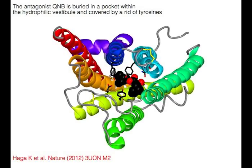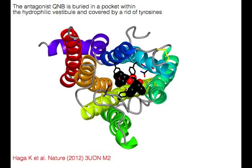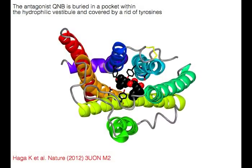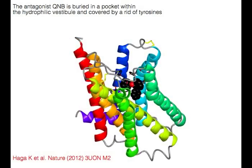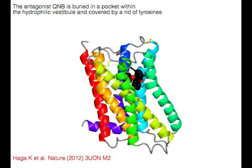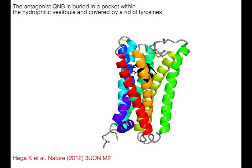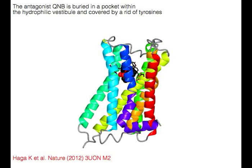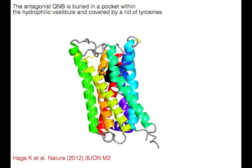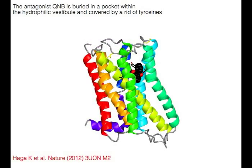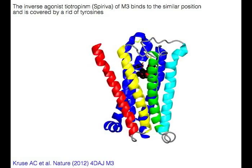Muscarinic antagonist QNB is buried in a pocket within the hydrophilic vestibule and is covered by a roof of tyrosines. The M3 inverse agonist tiotropium also binds to a similar position and is likewise covered by a roof of tyrosines.